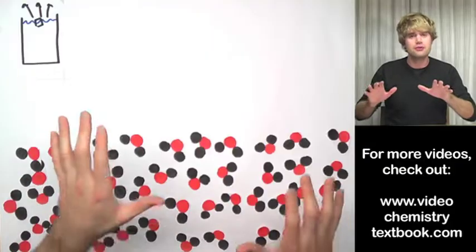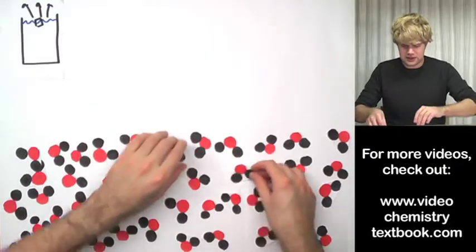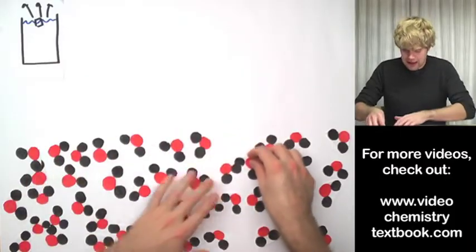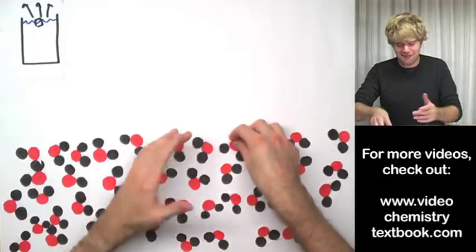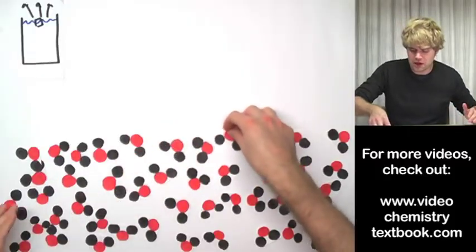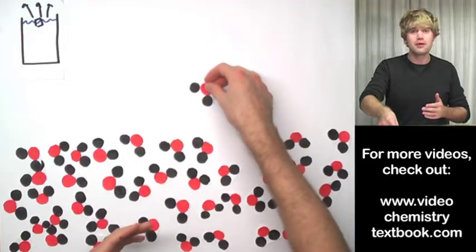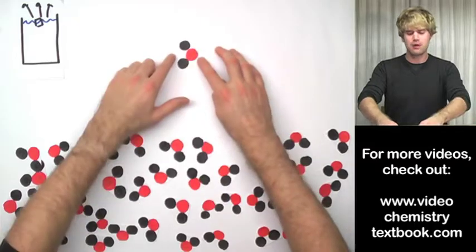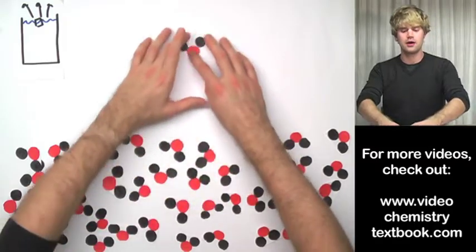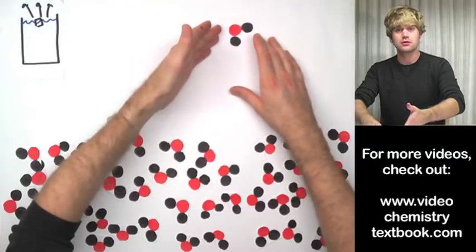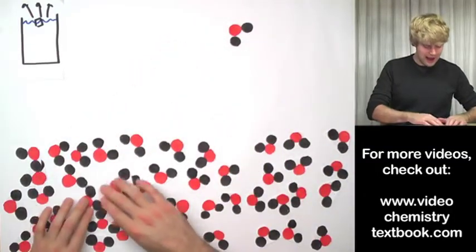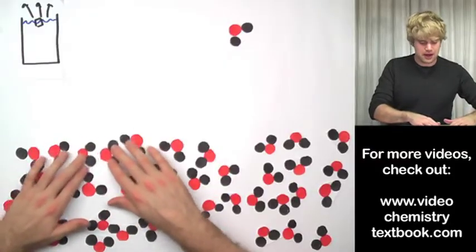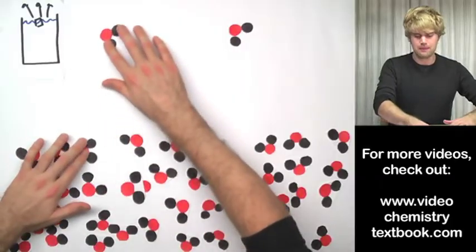Now when vaporization happens, one of these guys is going to be moving a little bit faster than the others and he or she is going to make it to the top, to the surface of the water and they're going to be moving fast enough that they can jump right out away from their buddies and float out into the air. And now this molecule that used to be a molecule of liquid water has become a molecule of water gas. And now maybe down here, somebody else is moving a little bit fast. They're moving fast enough, they make it up to the top and they're able to jump out and become gas.